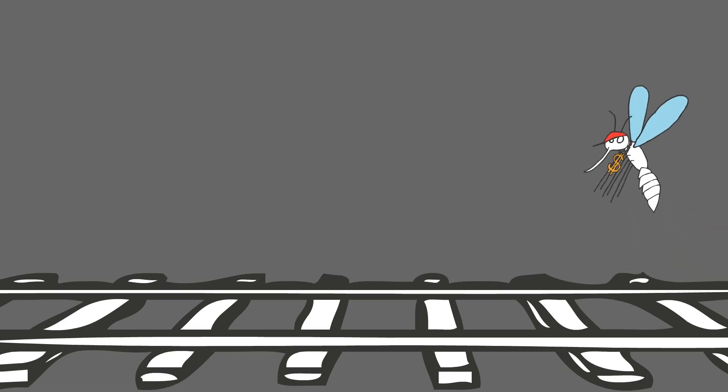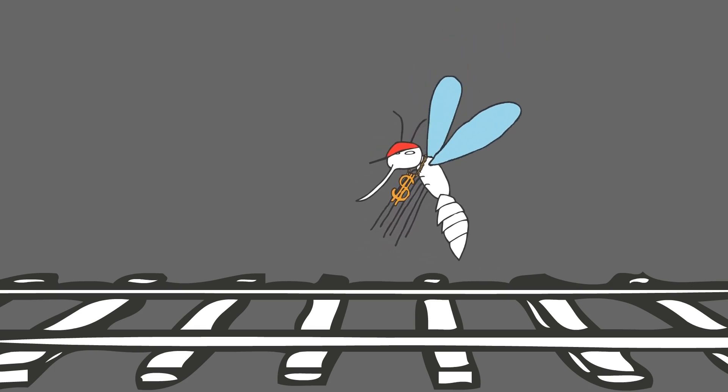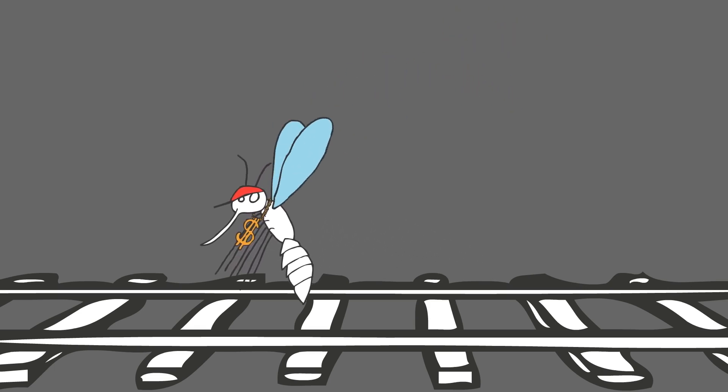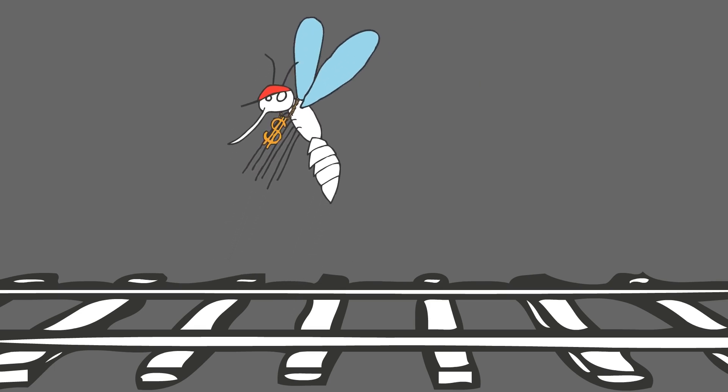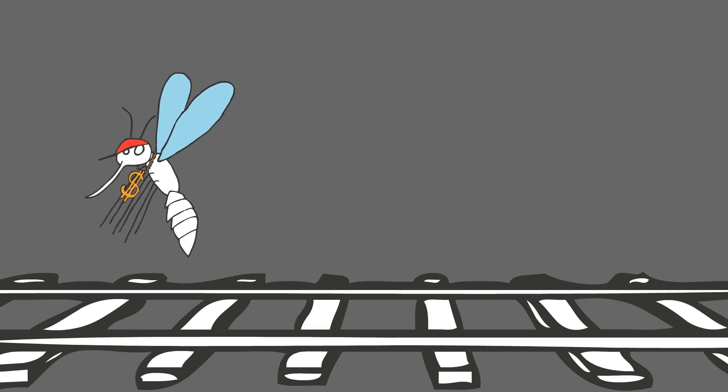The tunnels of the London Underground, however, are not inhabited by Culex pipens. Instead, they are populated with a uniquely urban species of mosquito. This urban species is especially adapted to life within the tunnels of the London Underground.